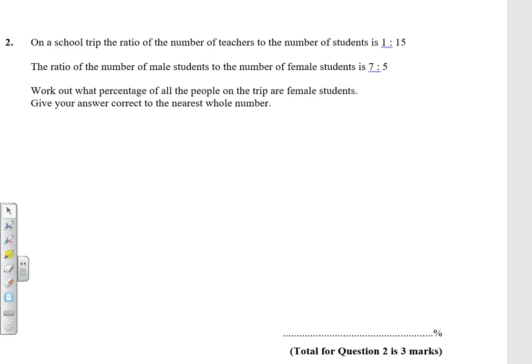Question 2. On a school trip the ratio of number of teachers to the number of students is 1 to 15. The ratio of male students to female students is 7 to 5. Work out the percentage of all people on the trip are female students.